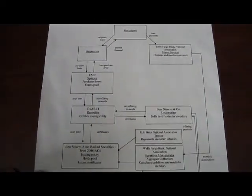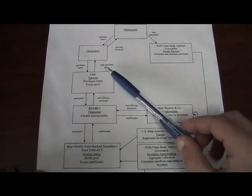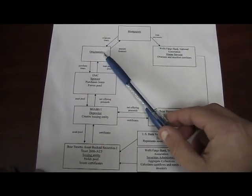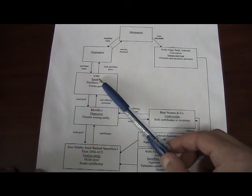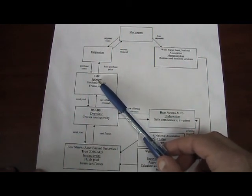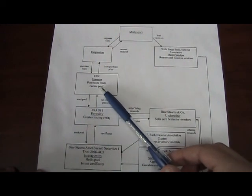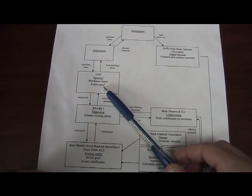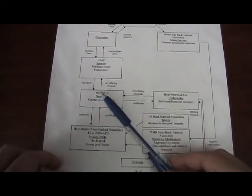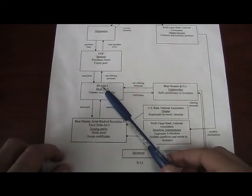There's nothing illegal or whatever about this, but here's the thing. These originators, they got their money from this entity called EMC. They're purchasing loans. They're forming this pool. Let's go a little further down here. Where are these guys getting their money?